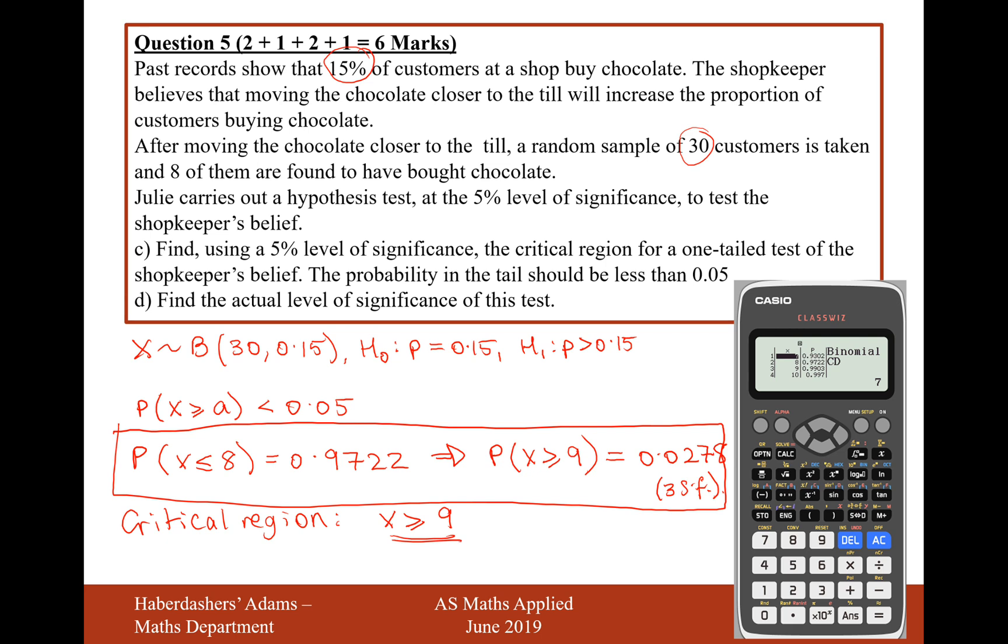So, 9 is the answer to that question, whereas that amount of people or more has a smaller than 0.05 probability. The answer to part D states the actual critical significance of this test. That's just the answer to this answer here. It's going to be 2.78%.